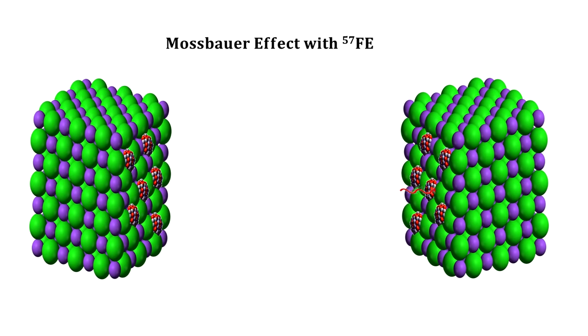What Mössbauer discovered was that if he embeds the iron atoms in a crystal, the recoil is reduced dramatically, and absorption can be re-established.